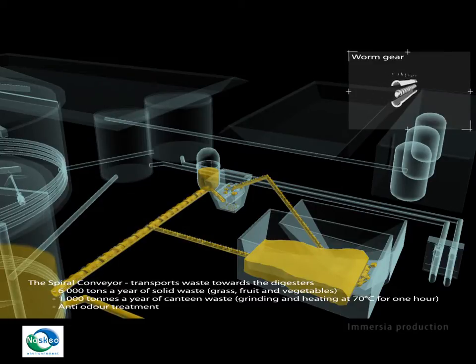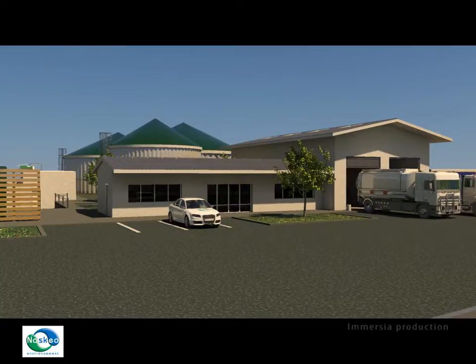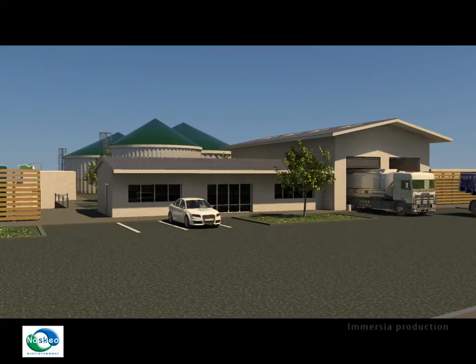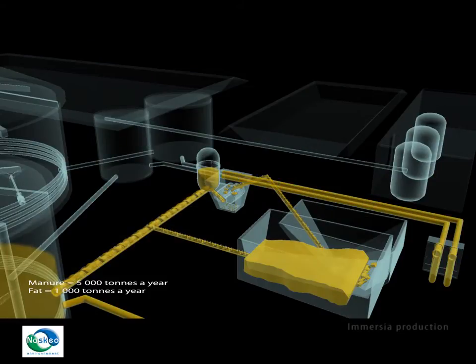The spiral conveyor transports waste towards the digesters. Industrial wastewater and fat are received in storage tanks in order to level the supply of the digesters.